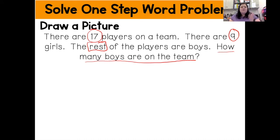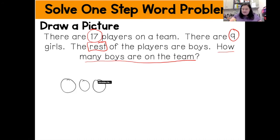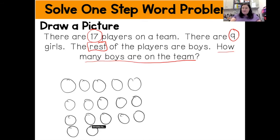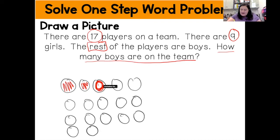Now I am ready to draw my picture. I know that there is a total of 17 players on the team, so I'm going to draw 17 circles. These 17 circles are going to represent the 17 players that are on the team. Now I'm going to go back through my word problem — there are nine girls — so I'm going to take my red pen and color in nine of the circles. Those are going to be my nine girls.